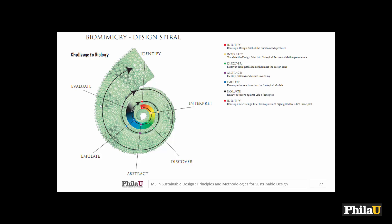Then you translate the design brief into biological terms or parameters. The process has a spiral structure: discover biological models that meet the design brief. Wherever you have a problem, somewhere in nature it's been solved — including financial problems. People are using biomimicry to solve financial problems because energy is extremely valuable in the natural world. Any animal that has energy will treat it very carefully and sparingly. Money is like energy. Then you abstract, identify patterns, and create a taxonomy — a menu of items that fit within a category, like lining up all different species of butterflies.